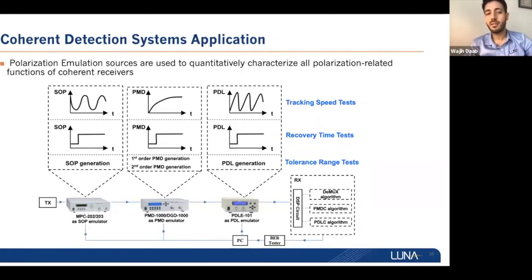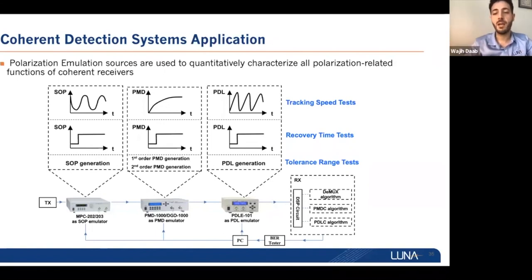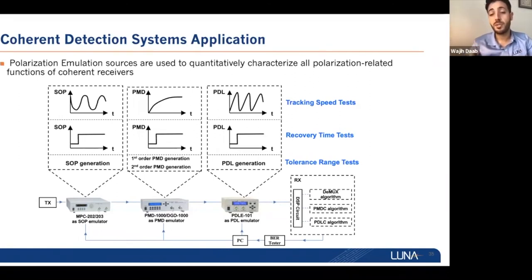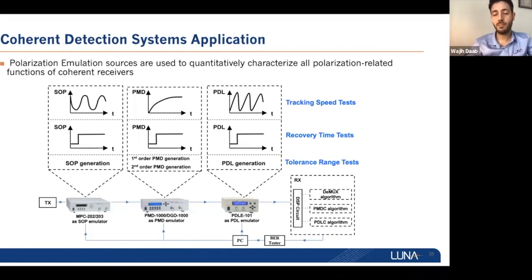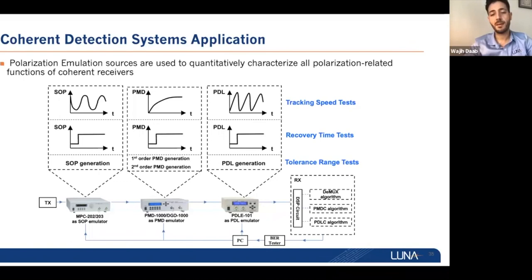In coherent detection systems, compensation is done digitally at the receiver. However, in order to stress and characterize the polarization-related functions in coherent receivers, you need polarization emulation instruments — a high-speed polarization mode dispersion emulator and a high-speed polarization-dependent loss emulator. We have those options to stress coherent receivers for polarization performance.